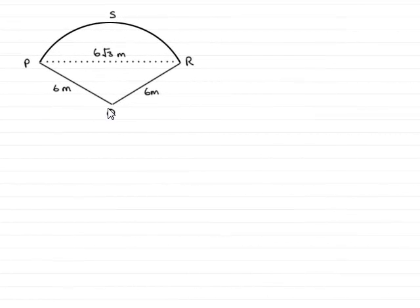In the first part of this question, I've drawn the patio. It's a sector of a circle PSRQ. The center of the circle is at Q, and the radius is 6 meters.